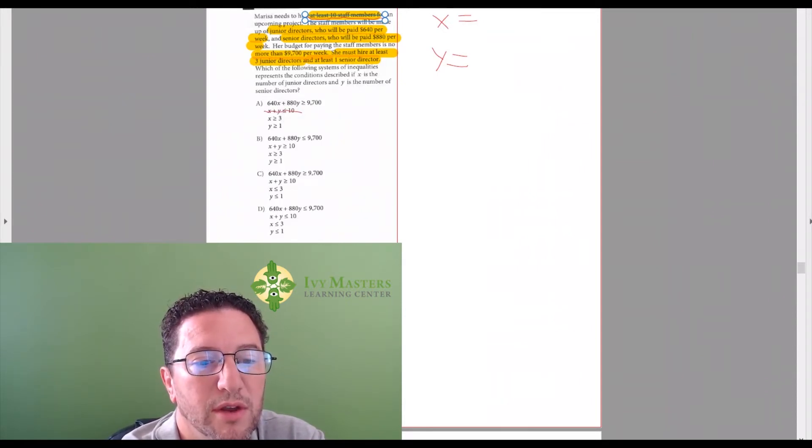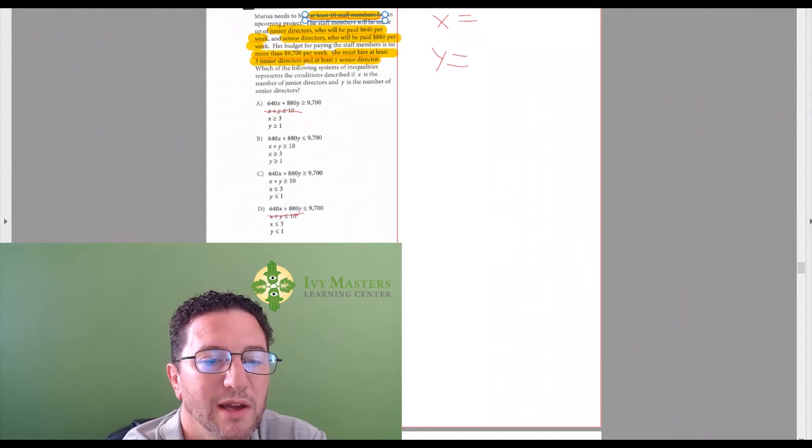B is good. It's greater than or equal to, C is good, greater than or equal to 10. D is gone. X plus Y is less than or equal to 10.